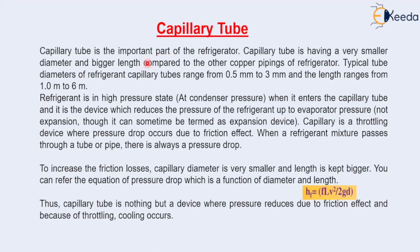The capillary tube is an important part of a refrigerator. It has a very small diameter and a bigger length compared to other copper piping in the refrigerator. Typically, the diameter of refrigeration capillary tubes ranges from 0.5 mm to 3 mm, and the length ranges from 1 meter to 6 meters.